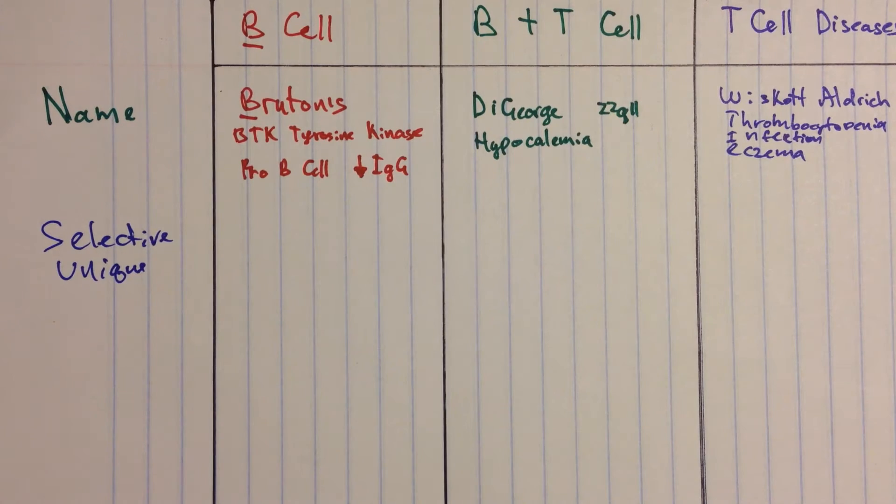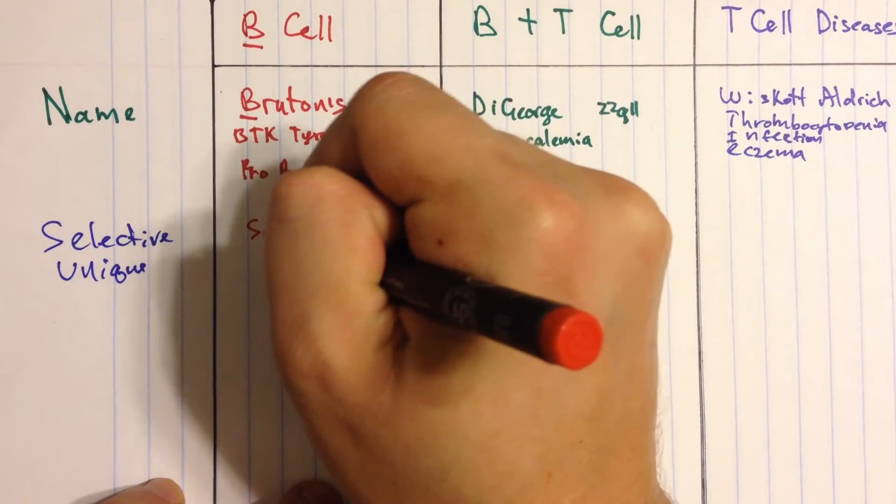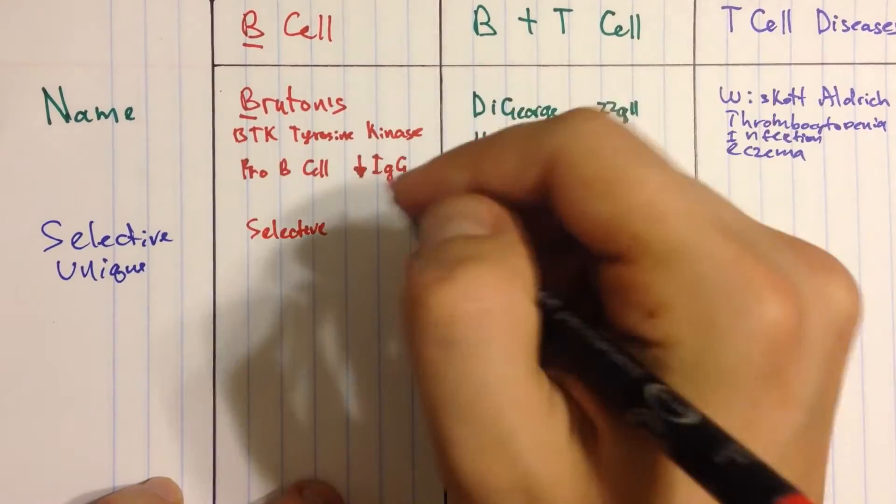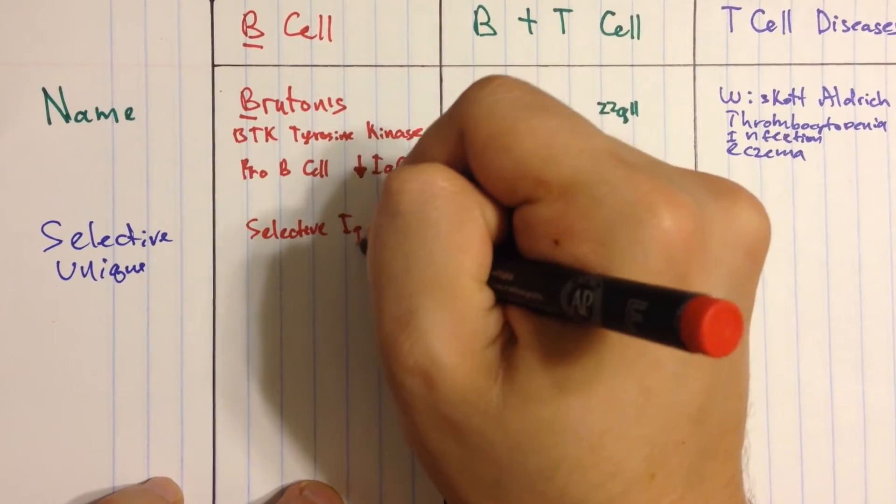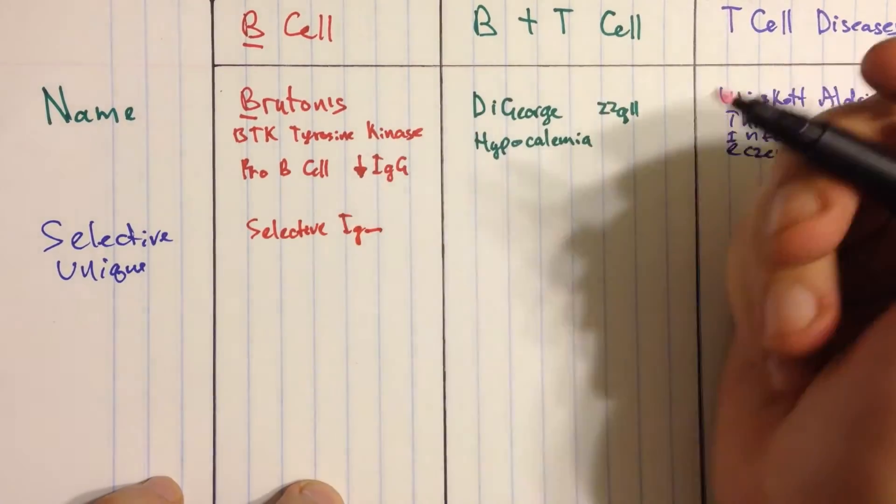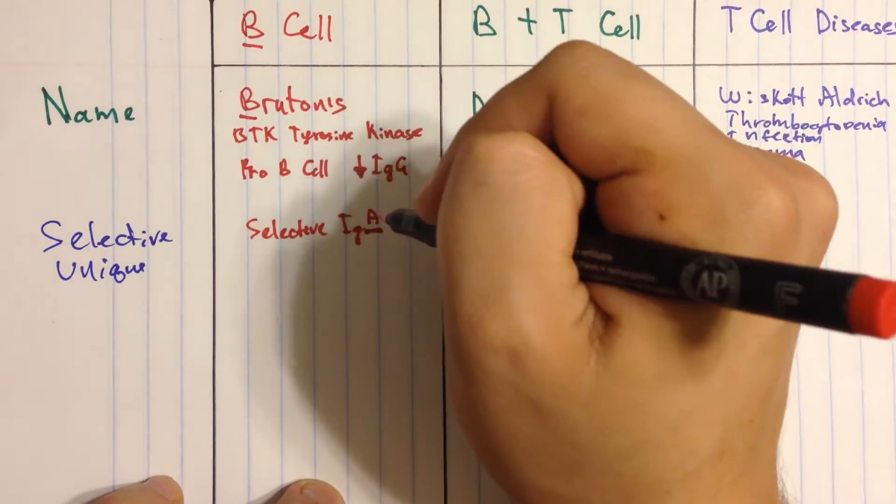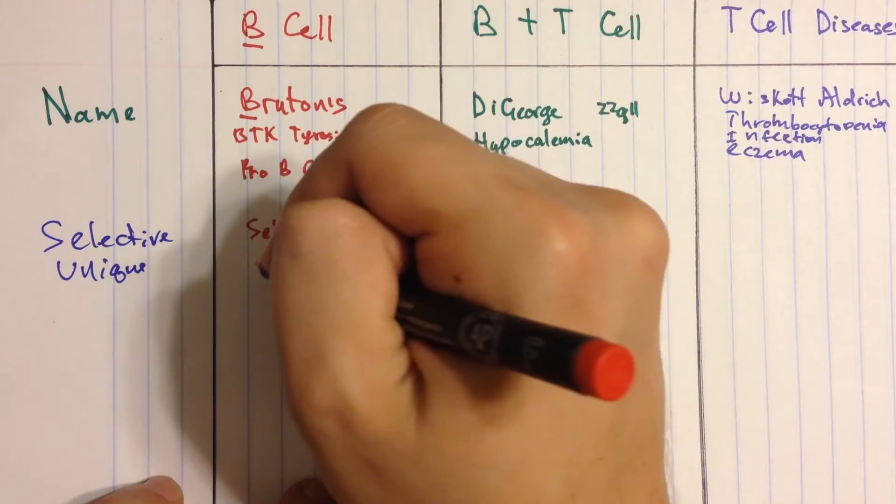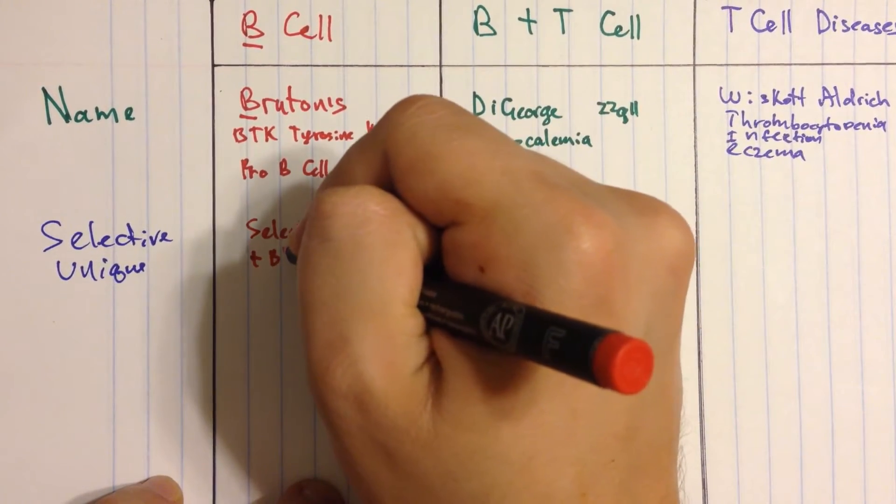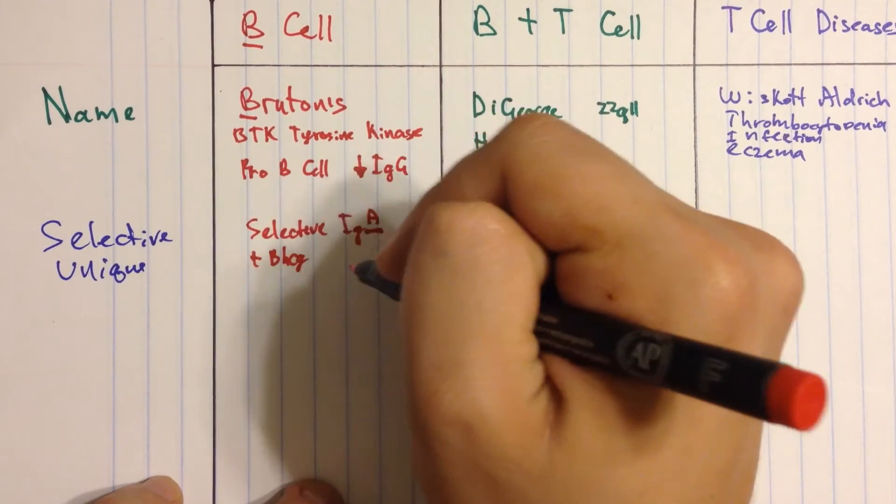So in B-cells, when we're talking about a B-cell and you have an antibody problem, you're talking about selective IgA deficiency. Now I put a blank here because it could be anything, but most of the time it's IgA. And the way these people present is they usually tell you that there's a positive pregnancy test, beta-hCG positive, and that's because of a heterophil antibody.